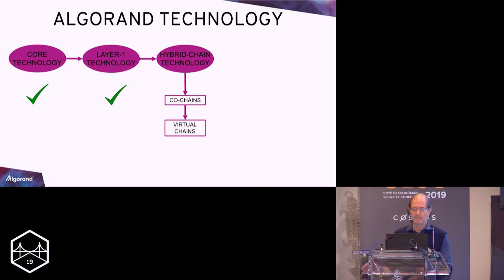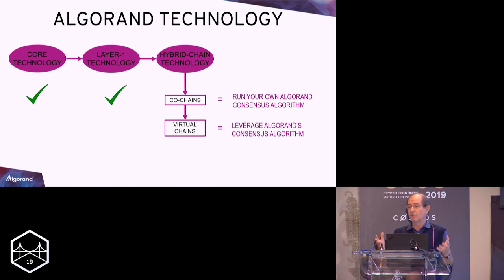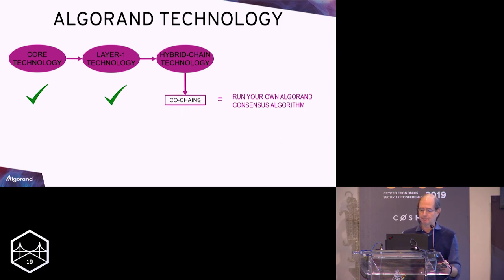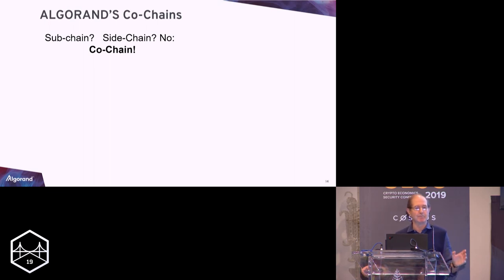There are two ideas here. One are two architectures. One is co-chains and one is virtual chains. Co-chains means you run your own Algorand consensus algorithm and you interact with everybody else. For lack of time let me focus just on co-chains. First of all notice the name. It's not a sub-chain, who wants to be sub of anything. And it's not even a side chain. It's a co-chain, so we're talking about equal. A co-chain essentially is his own master. He runs his own consensus algorithm. It's private outside. Nobody sees the transaction but actually transparent inside.